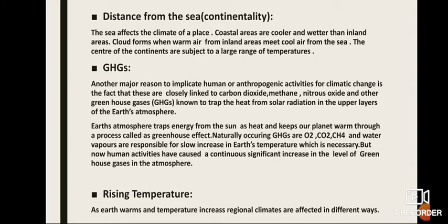The second point is greenhouse gases. A major reason to implicate human or anthropogenic activities for climatic change is that these are closely linked to carbon dioxide, methane, nitrous oxide, and other greenhouse gases known to trap heat from solar radiation in the upper layers of the earth's atmosphere. Earth's atmosphere traps energy from the sun as heat through a process called the greenhouse effect. Naturally occurring greenhouse gases — oxygen, carbon dioxide, methane, and water vapor — are responsible for a slow increase in earth's temperature, which is necessary. But human activities have now caused a continued significant increase in the level of greenhouse gases in the atmosphere.